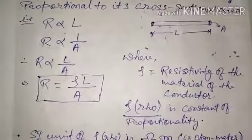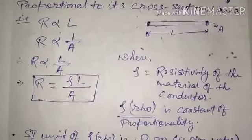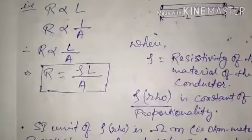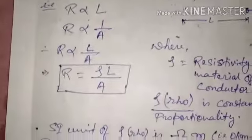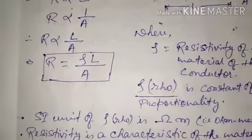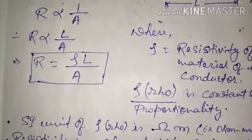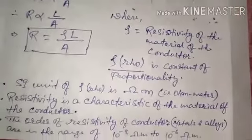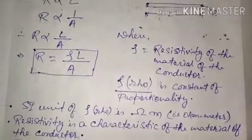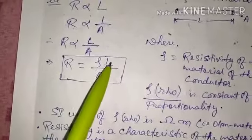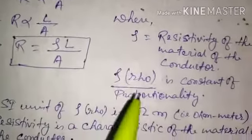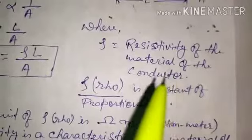The mathematical form is: R is directly proportional to L, and R is inversely proportional to A. Combining them, R is directly proportional to L/A. After introducing the constant of proportionality, we get R = ρL/A. Here ρ (rho) is the constant of proportionality, called the resistivity of the material of the conductor.